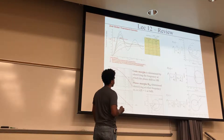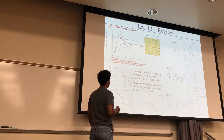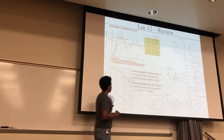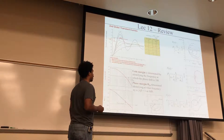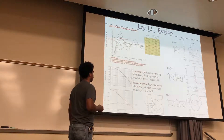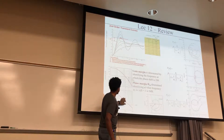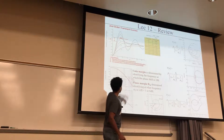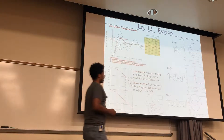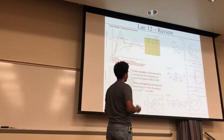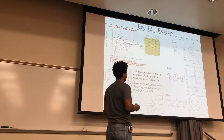For lecture 12, we looked at overshoot — it's also on your latest homework. Here's a table of overshoot and phase margin. Overshoot is the peak minus final over the final value. We also looked at gain margin and phase margin: gain margin is determined by identifying the frequency at which the phase shift is 180 degrees. Phase margin is determined by identifying the frequency omega_t at which the gain equals one, or zero decibels.